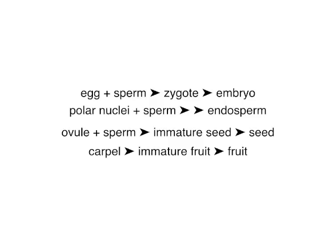Ovules plus sperm result in immature seeds that grow up to be seeds. And then the carpel after fertilization is an immature fruit which grows up to be a fruit.